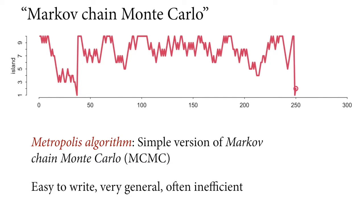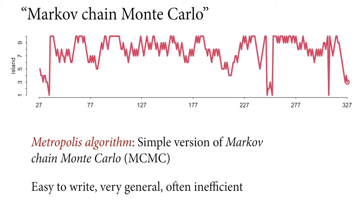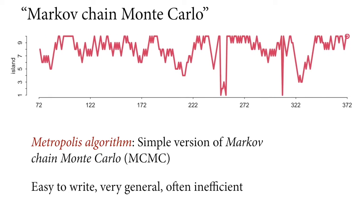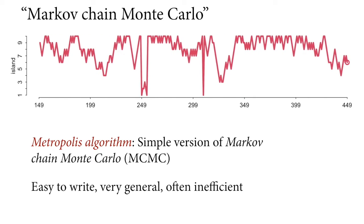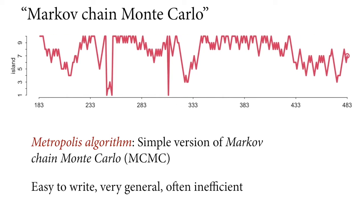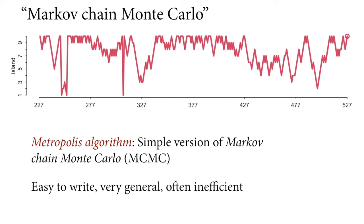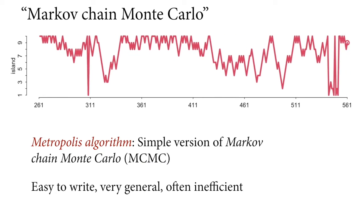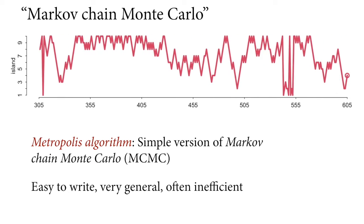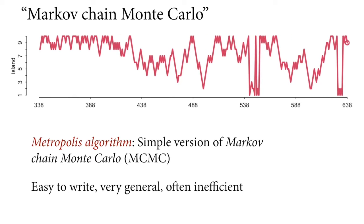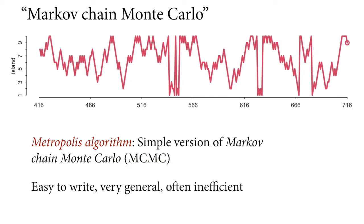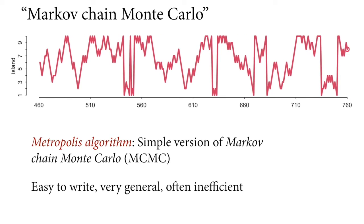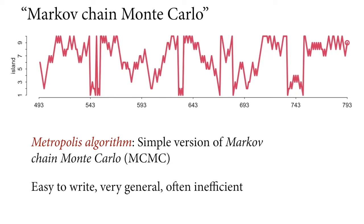This particular algorithm — the Metropolis algorithm — is a very simple version of Markov chain Monte Carlo, and it's the original one. It's very easy to write — you can do it in half a dozen lines of R code or any other scripting language — and it's very general. However, it's often inefficient, especially as the dimensionality of the problem grows. It can be quite hard to tune and make it work.